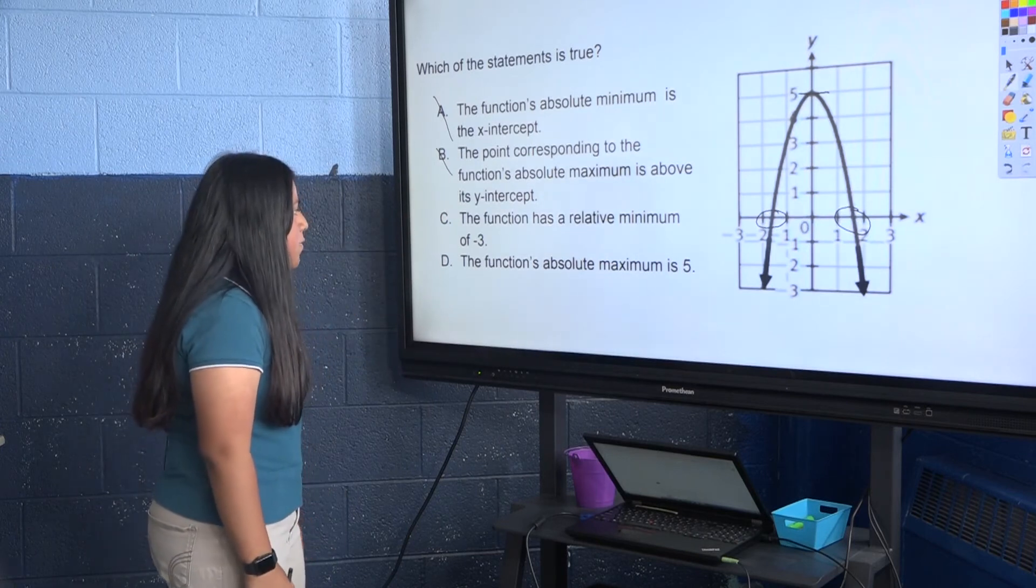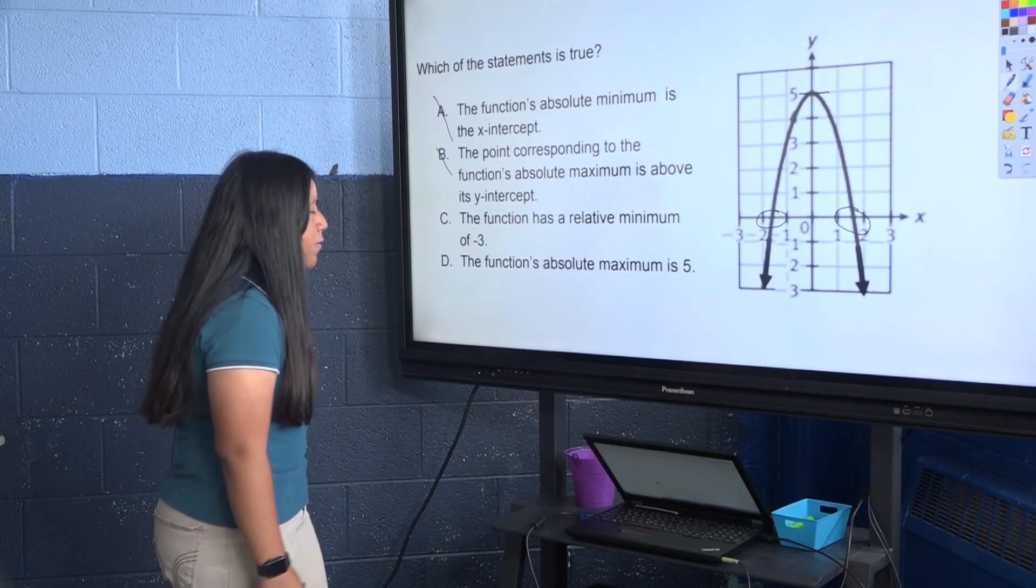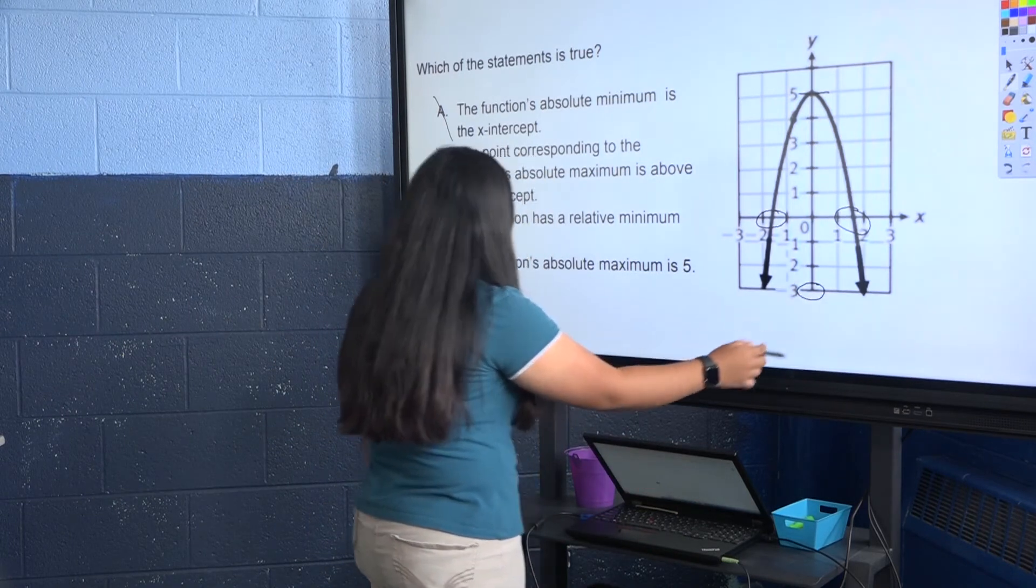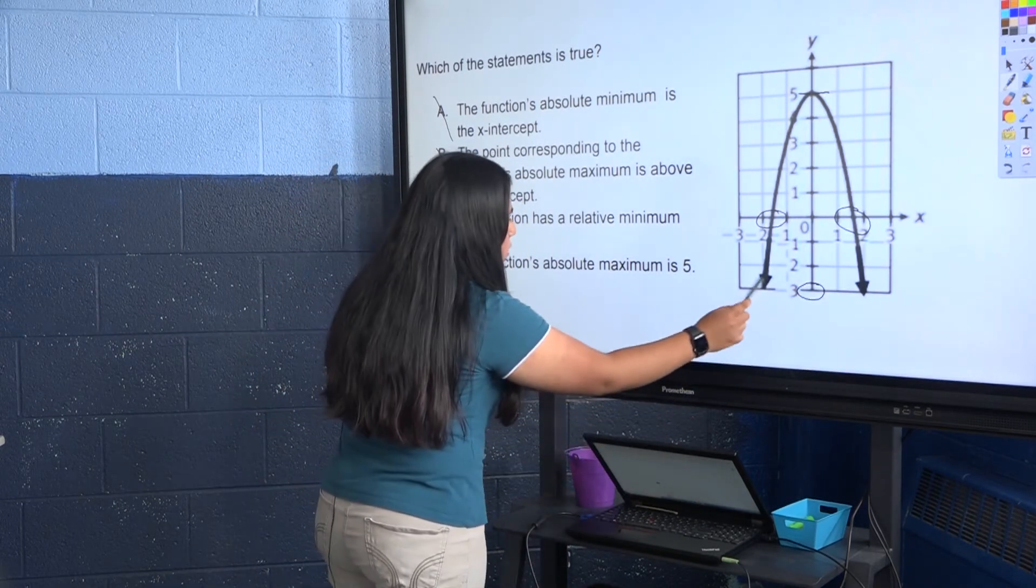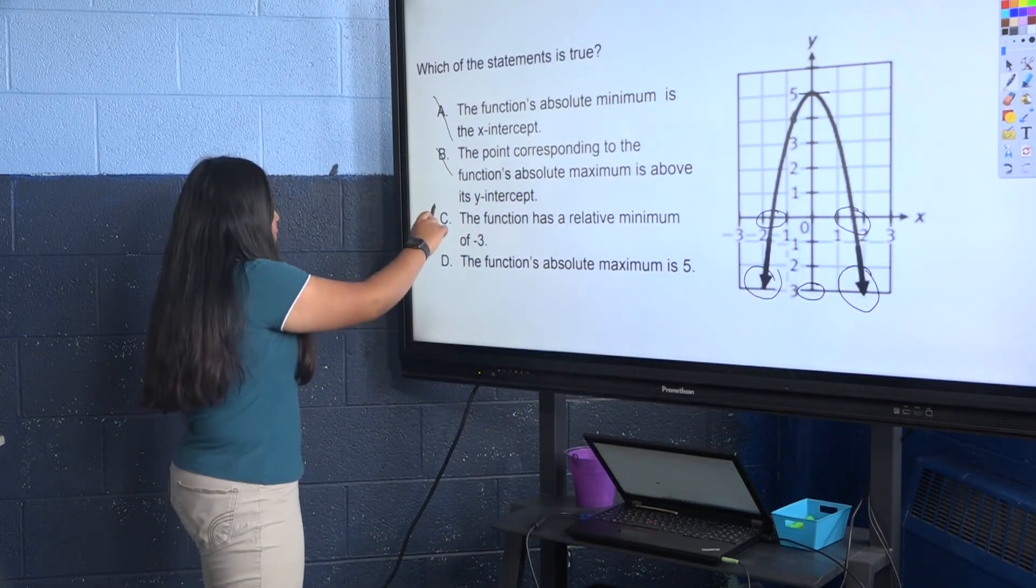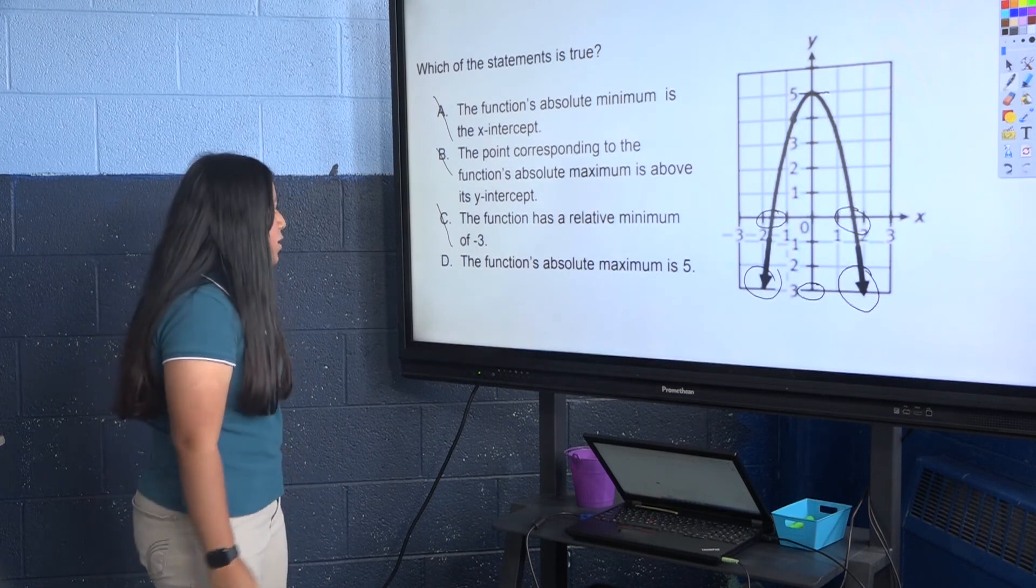C. The function has a relative minimum of negative 3. The relative minimum is talking about the y-axis, which would be right here, negative 3. But these arrows indicate that the graph is continuous, so it would go below negative 3. So C is out.